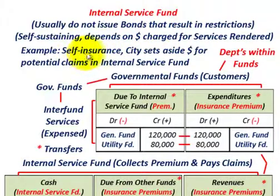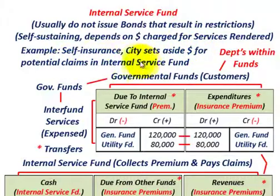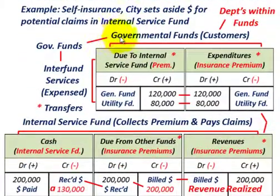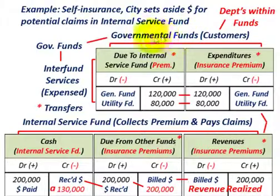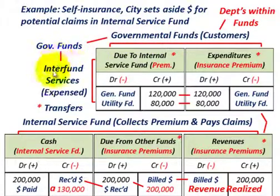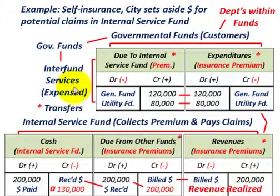The example we're going to go through is a self-insurance scenario, where the city is self-insured and sets aside some dollars for potential claims in the internal service fund. When dealing with this internal service fund, the other governmental funds — like the general fund, special projects, capital projects — are going to be the customers, meaning the departments within those funds. Those inner fund services are going to be expensed within the customers or the governmental funds, so we're going to be looking at transfers between our governmental funds.